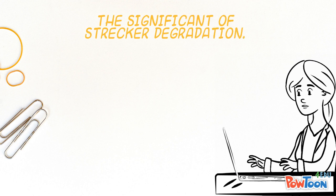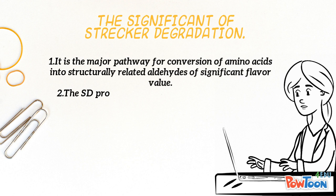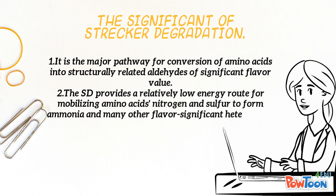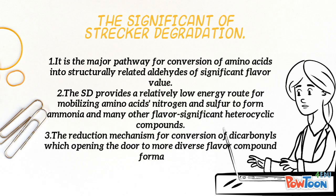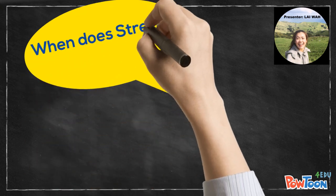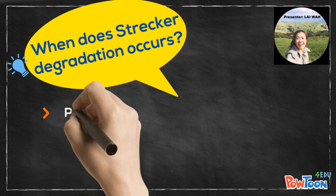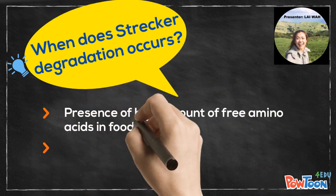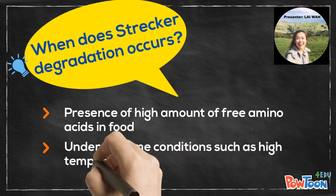To sum up, Strecker degradation plays several roles in the formation of flavor components in processed food. Strecker degradation occurs when there is presence of high free amino acids in food, or it can happen under more extreme conditions such as higher temperature or under pressure.